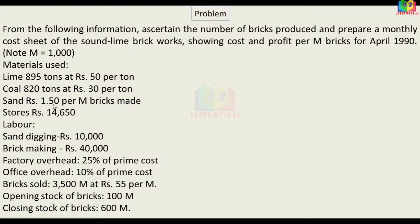Stores: 14,650. Labor — sand digging: 10,000; brick making: 40,000. Factory overhead: 25% of prime cost. Office overhead: 10% of prime cost.